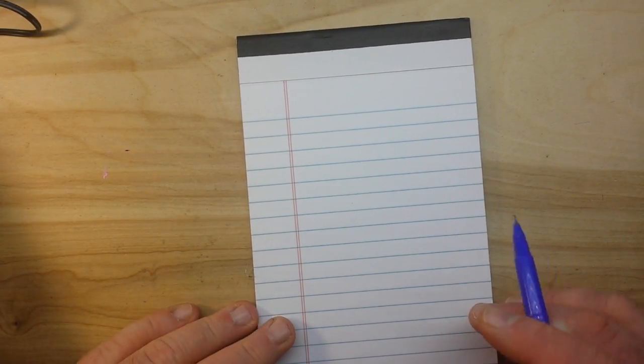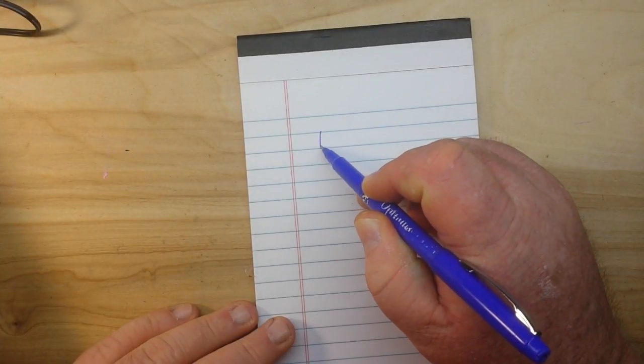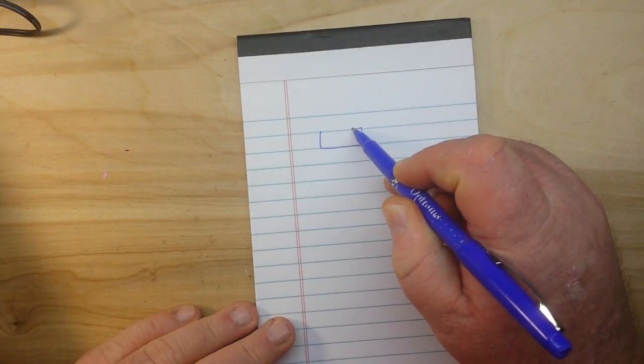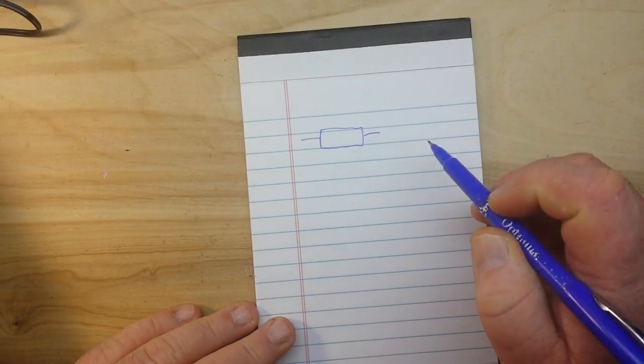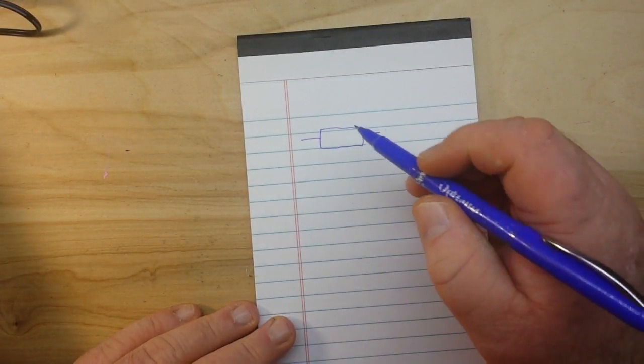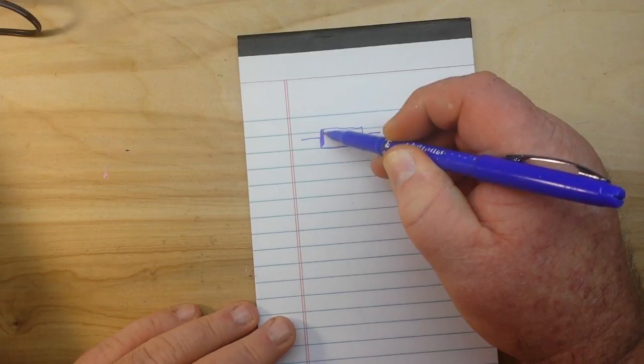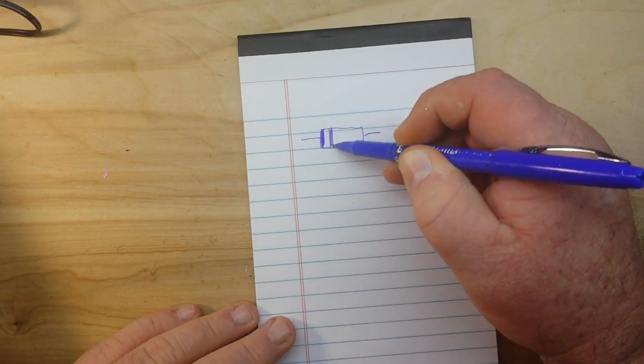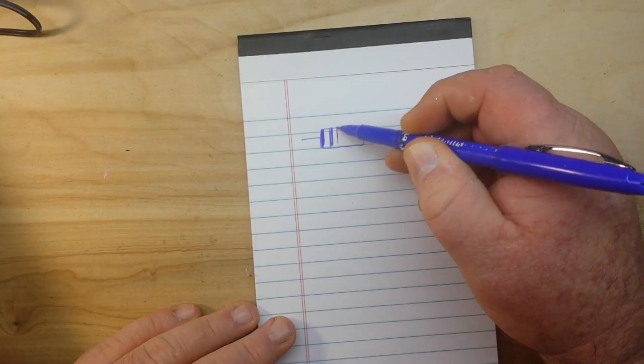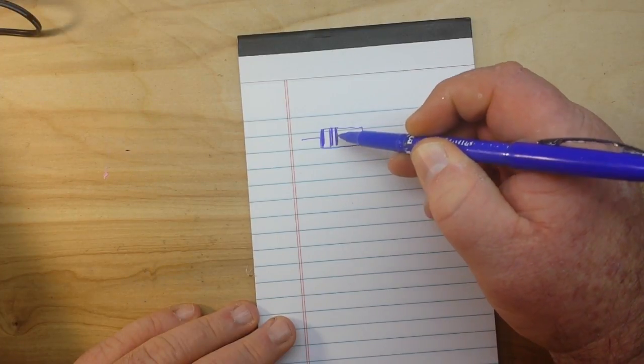So here is my drawing of a resistor. There's the first band, second band, third band. They're all supposed to be the same size. So anyway, we start out with our colors like this.